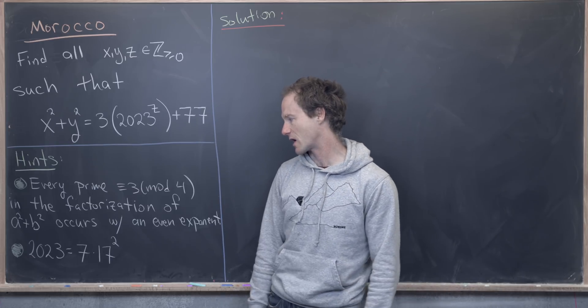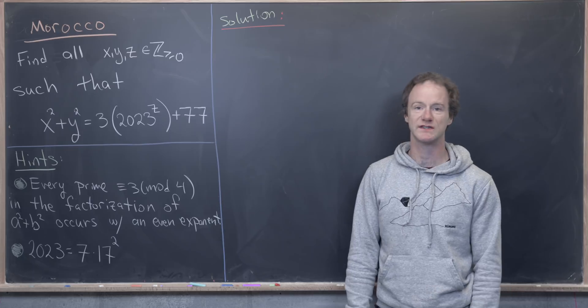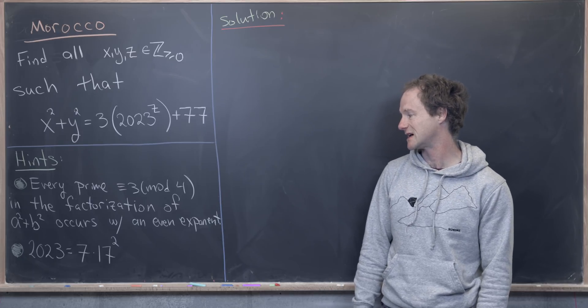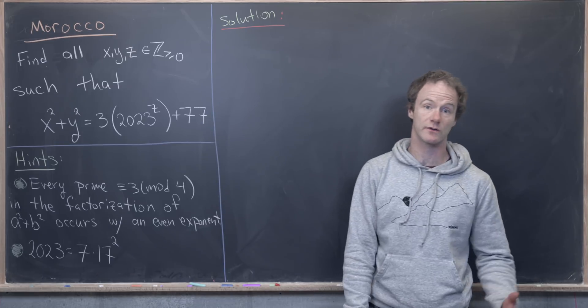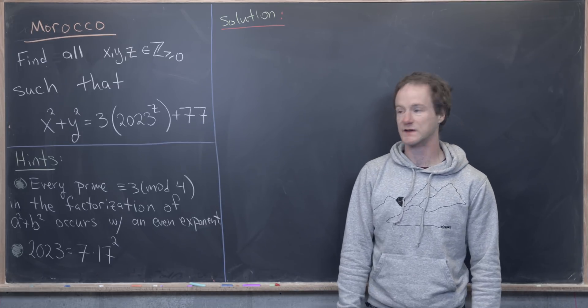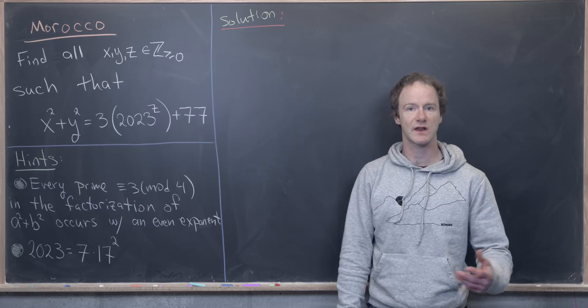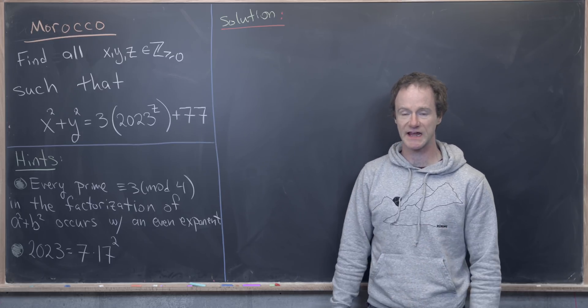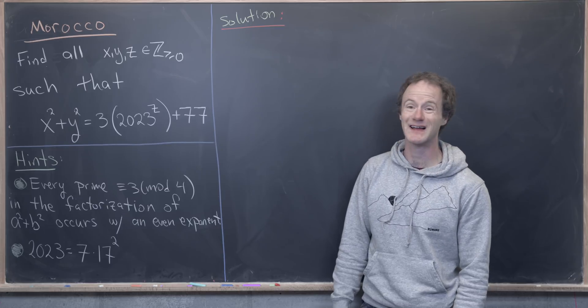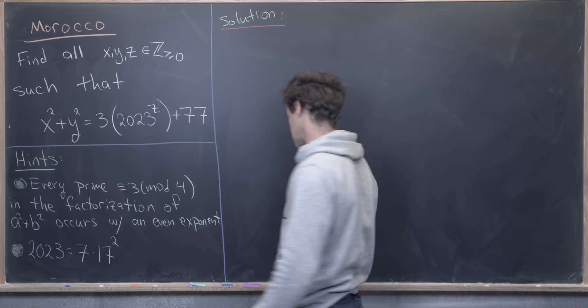Another thing that we'll use is the prime factorization of 2023 is 7 times 17 squared. So notice that 7 is congruent to 3 mod 4 as well. Okay, great. So now let's jump into it. Maybe we're going to look at a very first case, which will give us a solution. And that's the case when z equals 0.